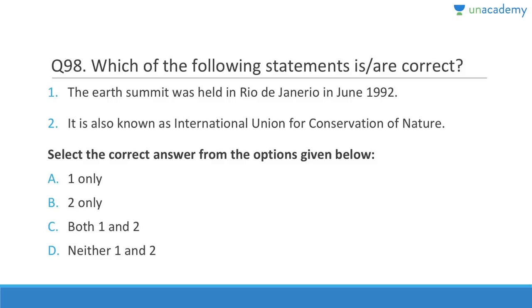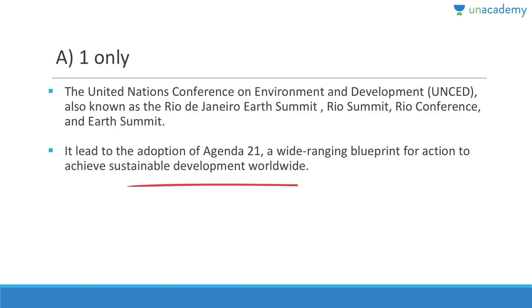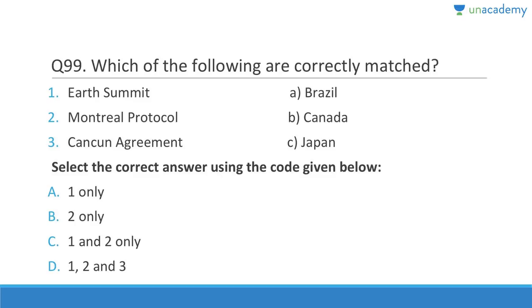Question 98: The Earth Summit was held in Rio de Janeiro in June 1992 — correct. It is also called UNCED (United Nations Conference on Environment and Development), the Rio Conference, or the Rio Summit. It led to the adoption of Agenda 21, a wide-ranging blueprint for achieving sustainable development worldwide.